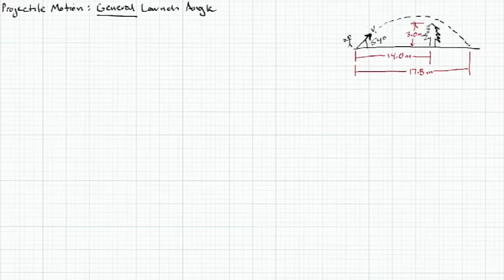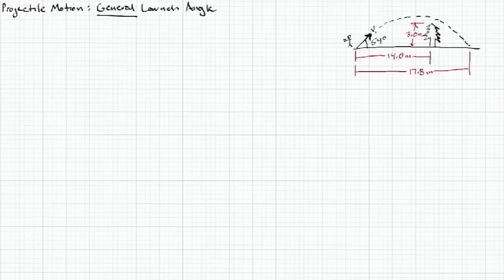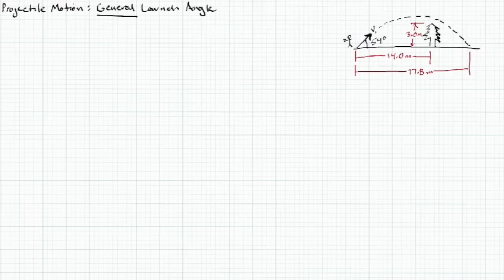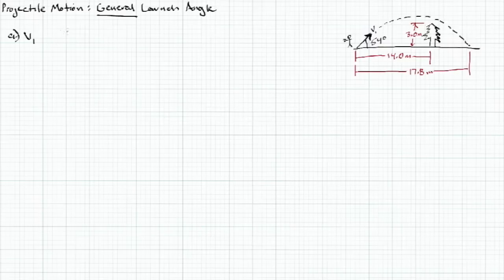We have a problem with a golfer who hits a ball at an angle of 54 degrees. It goes up into the air and comes back down on the other side of a tree. The tree is three meters tall and fourteen meters away from the golfer. The ball lands 17.8 meters away. Part A asks for the initial speed — not the x or y component, but the overall initial speed at 54 degrees.